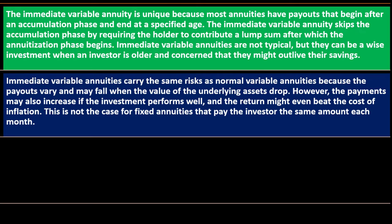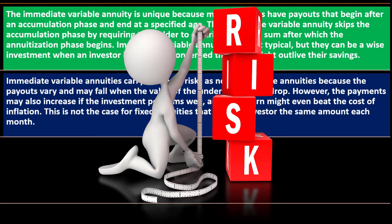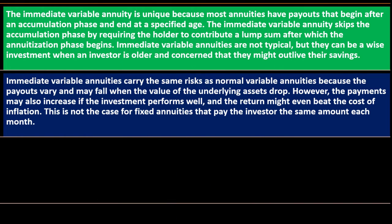Immediate variable annuities carry the same risk as normal variable annuities because the payouts vary and may fall when the value of the underlying assets drops. They're tied to the underlying assets, so performance matters. However, the payments may also increase if the investment performs well — with the risk comes possible greater reward — and the return might even beat the cost of inflation.